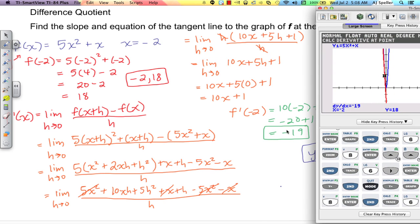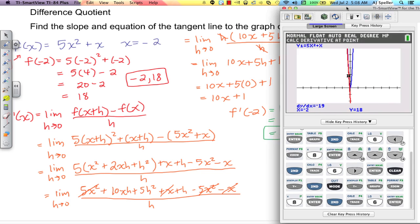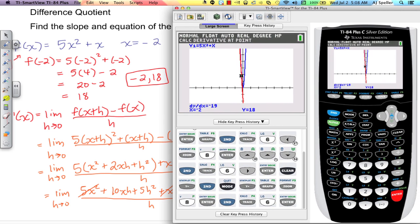Which is the same thing we calculated here at negative 19. And the other thing that we see here is that when x is negative 2, we see that y is also a positive 18, just like we had calculated.